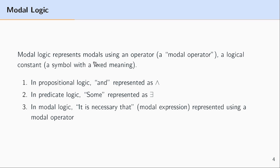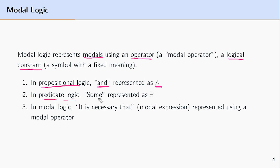In modal logic, we'll try to represent these modal expressions using operators, and these operators will be logical constants with a fixed meaning. In propositional logic, we represent the truth-functional use of 'and' with the conjunction symbol. In predicate logic, we represent 'some' using the backwards-E for 'there exists.' In modal logic, we'll do the same thing — we'll treat modal expressions like 'it is necessary that' and represent them using a specific operator.